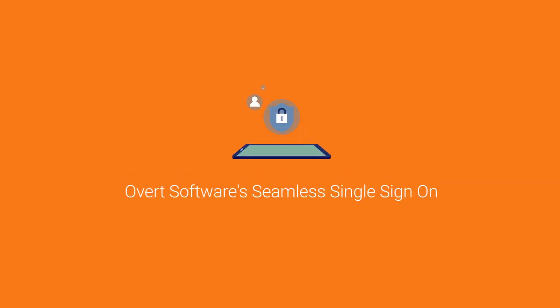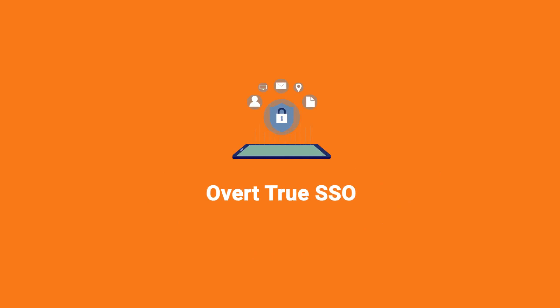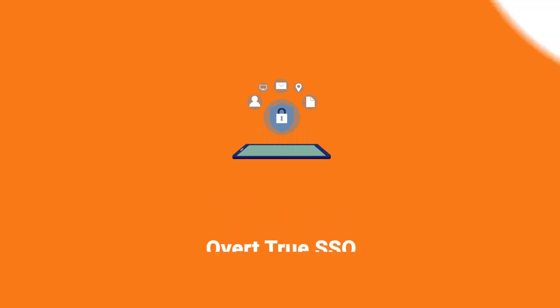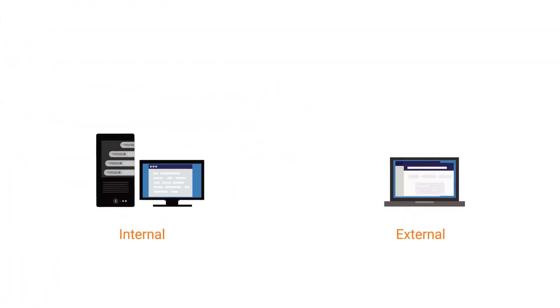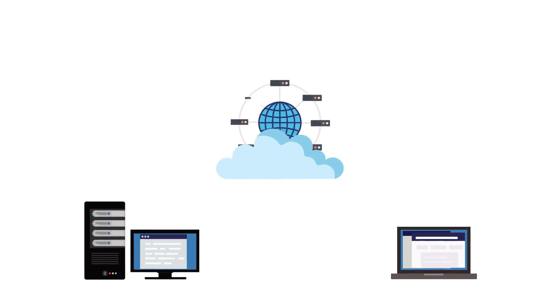Let's take a look at Overt Software's seamless single sign-on solution, which we call True SSO. This SSO solution allows both internal and external users to seamlessly move between online resources without needing to repeatedly sign in.